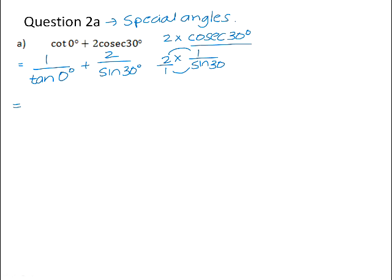Now, tan of 0 is 0, so it will give us 1 over 0 plus 2 over 1 half. And this fraction here is problematic because we cannot do division by 0, it is undefined. So because that part of the expression is undefined, it means that the value of the expression as a whole will in fact be undefined.